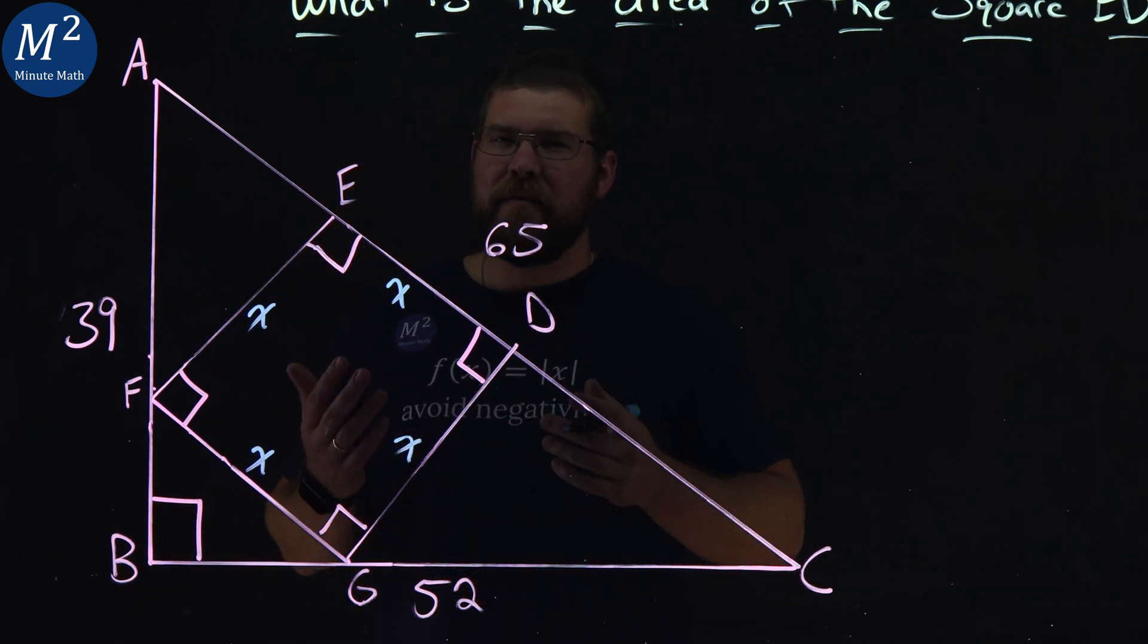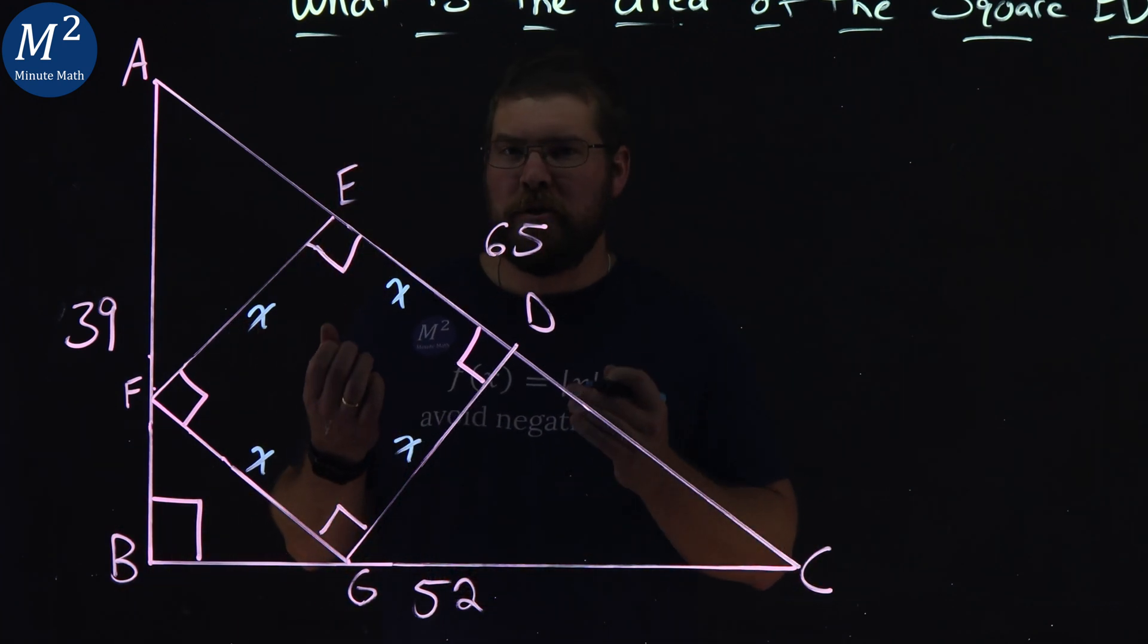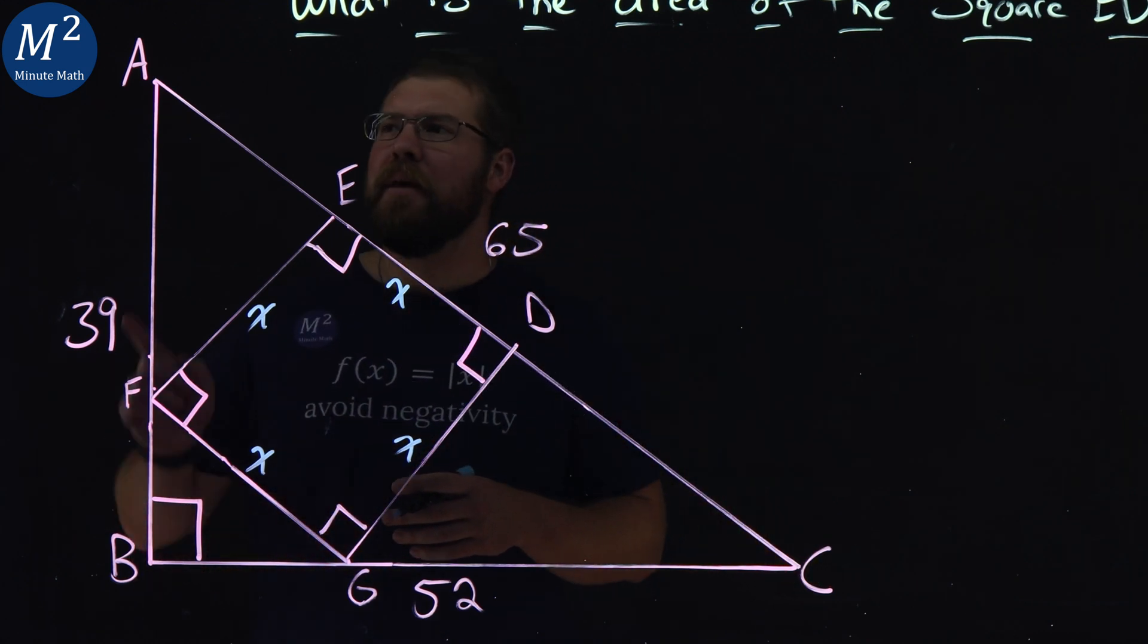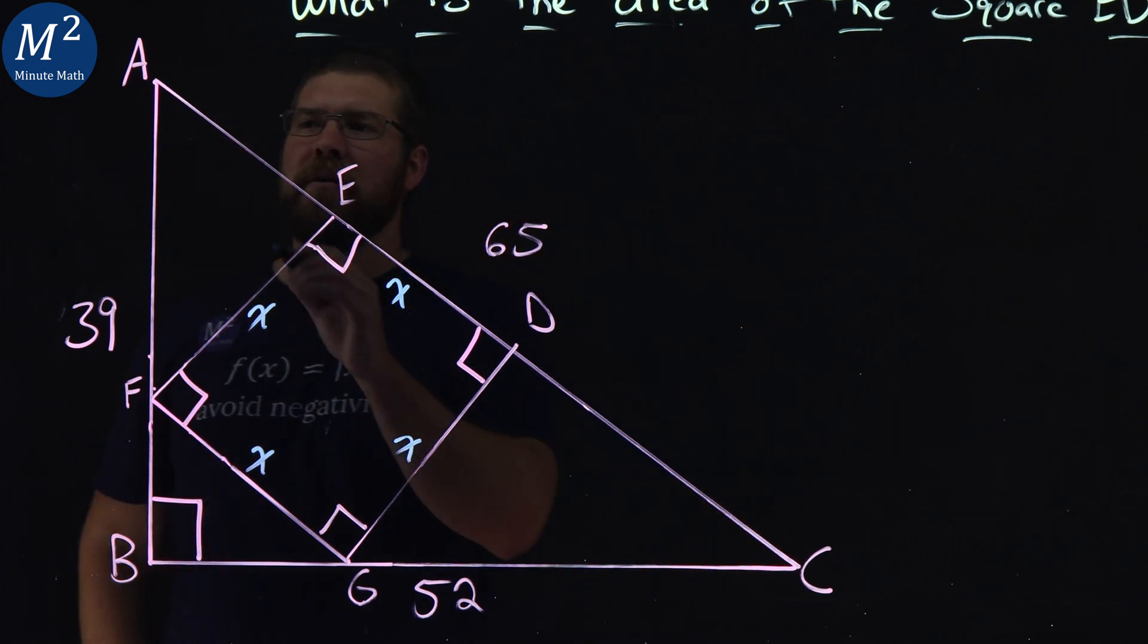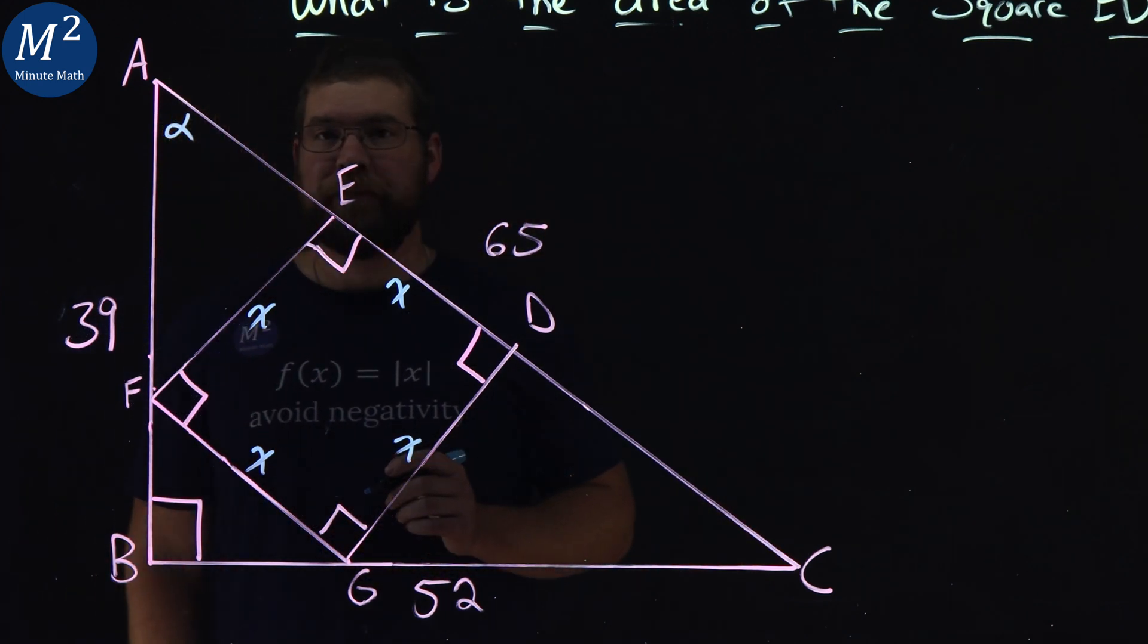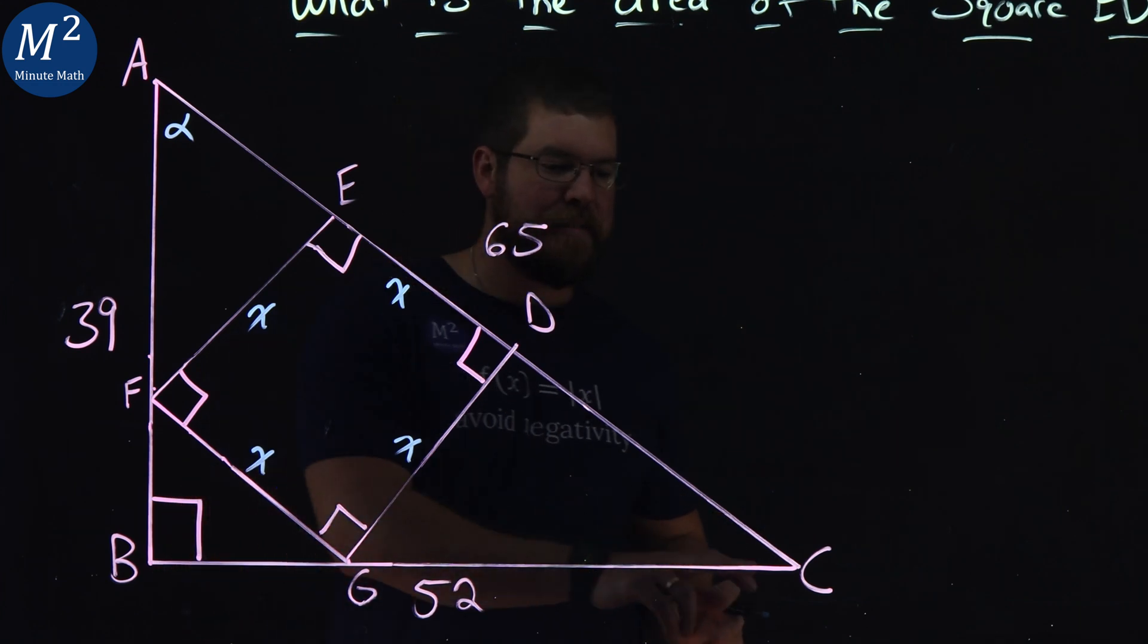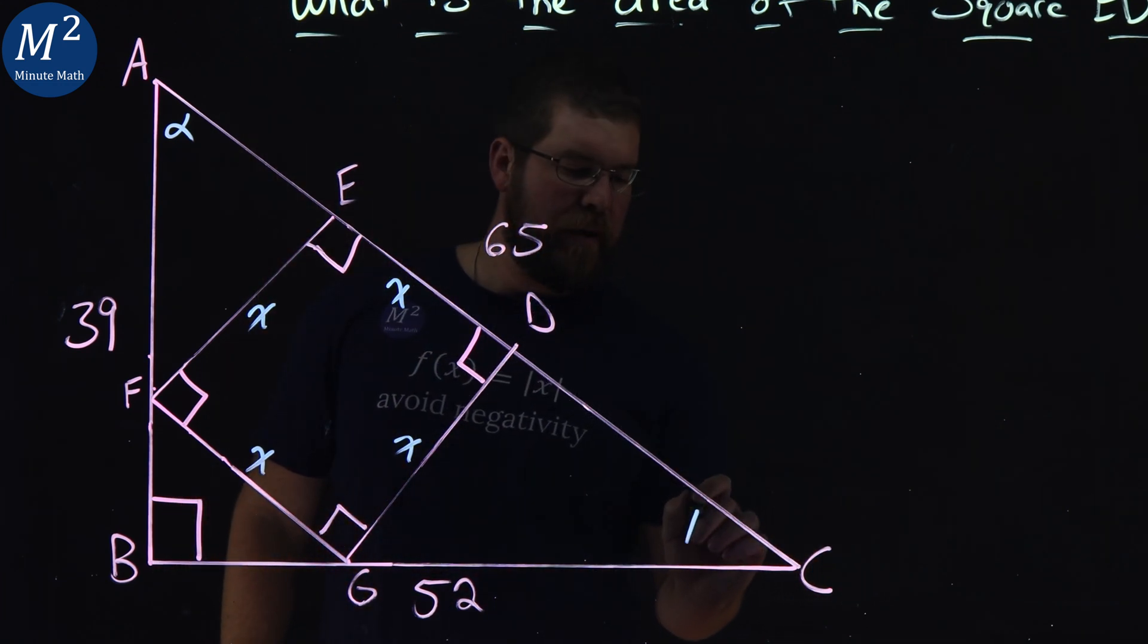All right, let's also get some labels. I want to know some angle measurements here. Well, not the exact measurement, but I need a label for it. Let's look at angle BAE, that angle here. Let's call that alpha. Well, if that is alpha, let's call angle BCD of the big triangle here, let's call that beta.